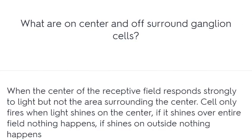What are on-center and off-surround ganglion cells? When the center of the receptive field responds strongly to light but not the surrounding area. The cell only fires when light shines on the center. If it shines over the entire field or only on the outside, nothing happens.